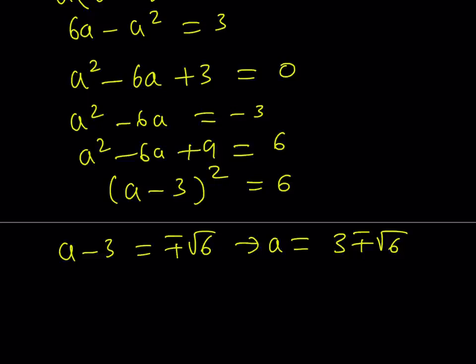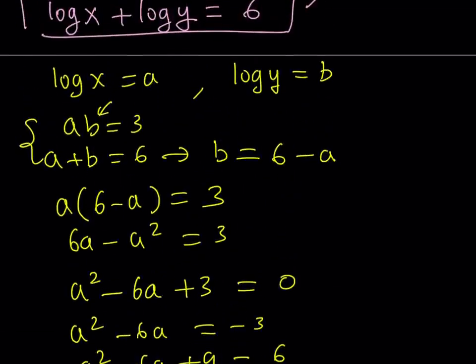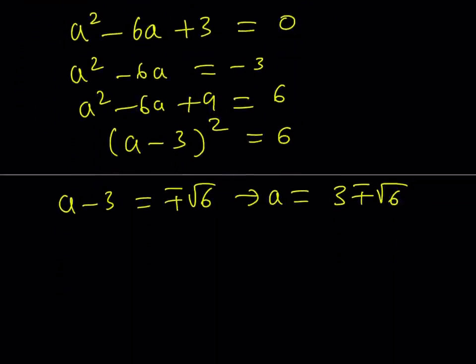Now, we've got to check, obviously, both of these solutions, and also make sure that this is a valid expression. Now, what is a and what is b? Well, b is just going to be 6 minus a. So if a is equal to 3 plus root 6, then b is supposed to be 6 minus that, which is going to be 3 minus root 6, right?